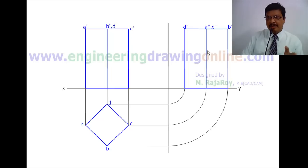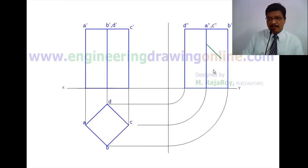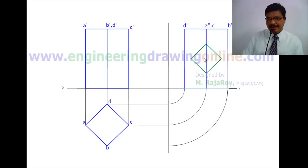Now it is time to represent the base of the horizontal square prism in the side view. Since the horizontal square prism faces are also equally inclined to VP, they must be at 45 degrees. You can draw this with a mini drafter, or alternatively construct a square separately, find the diagonal length, then from the center point draw four arcs to complete the square at 45 degrees. That is the easiest procedure.